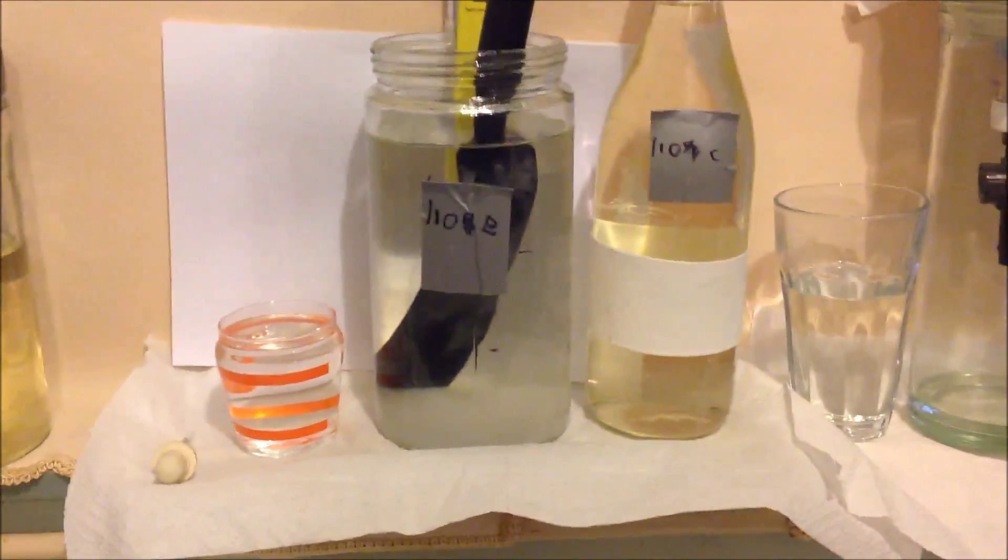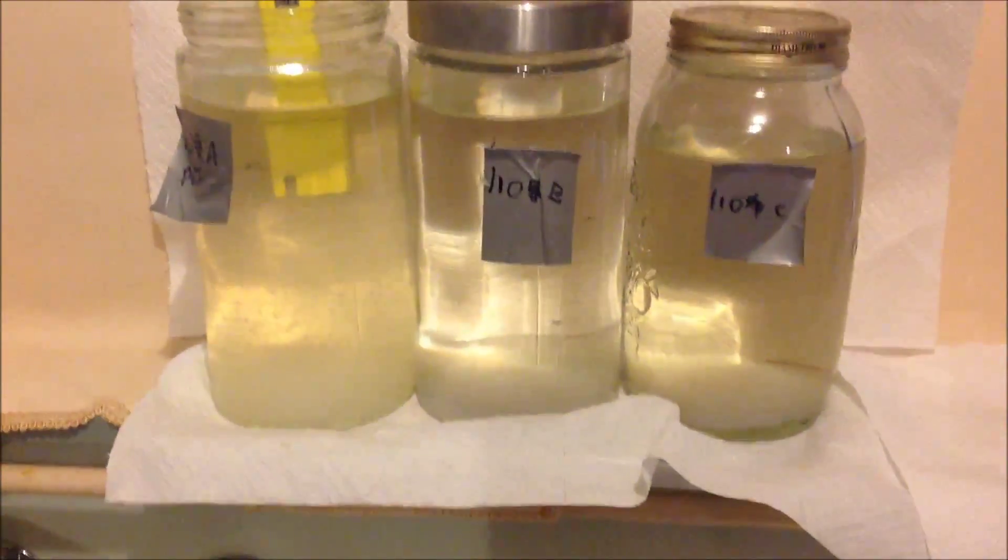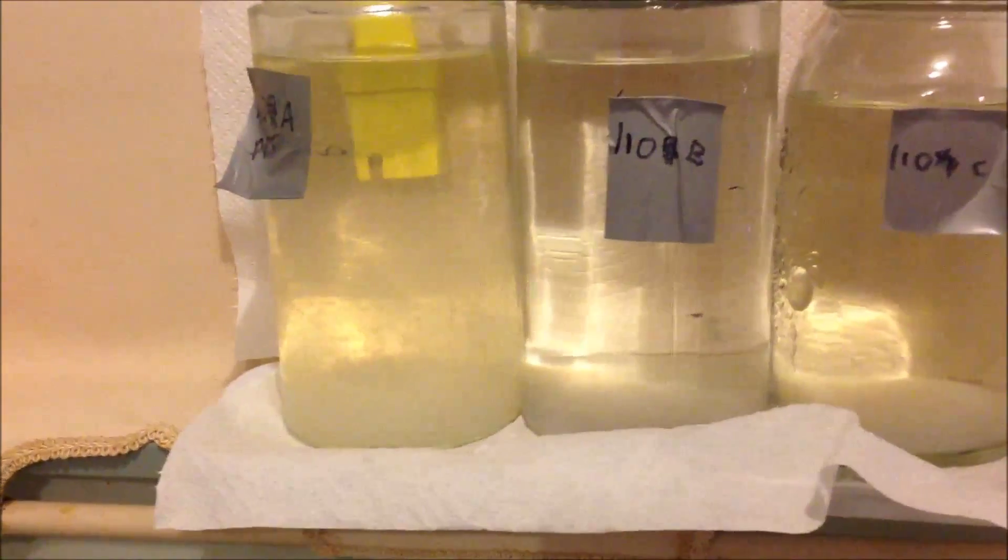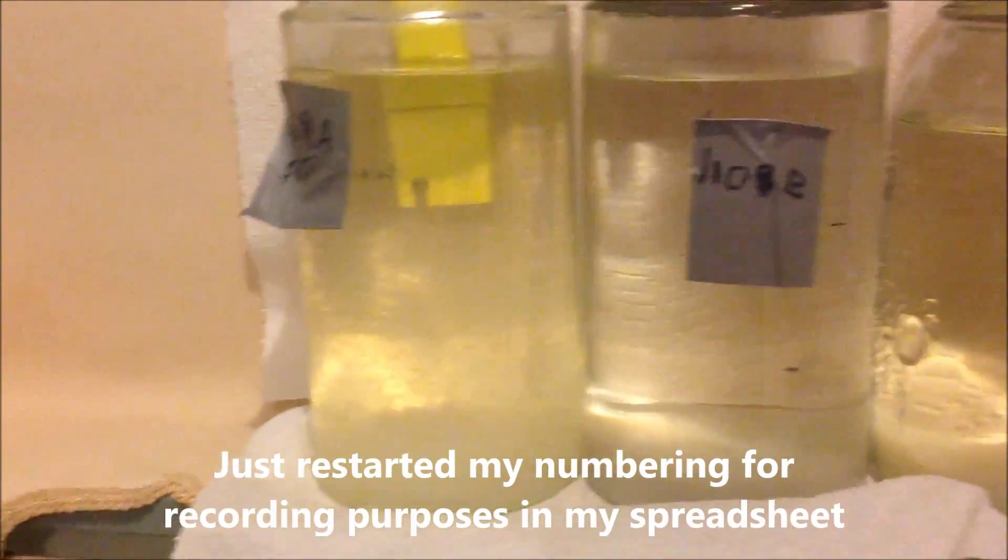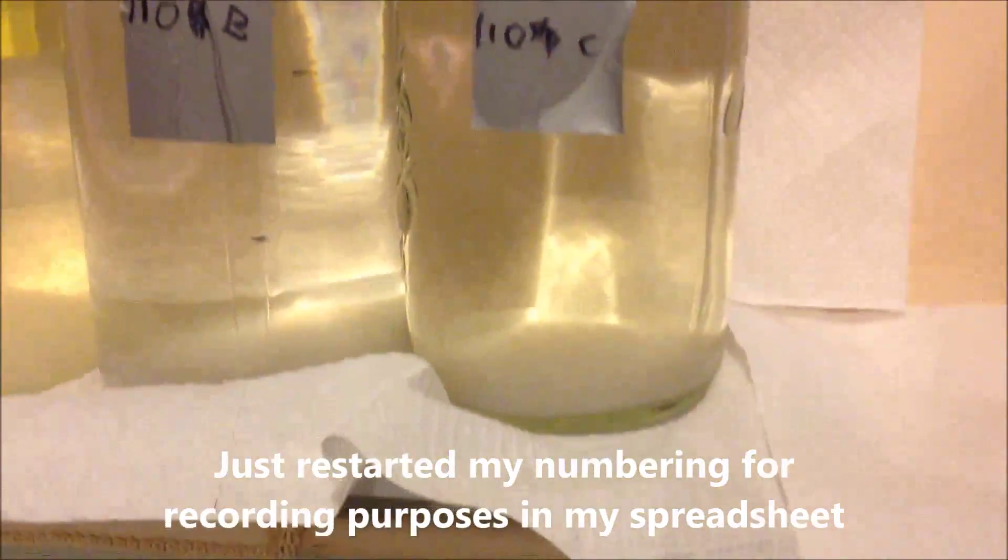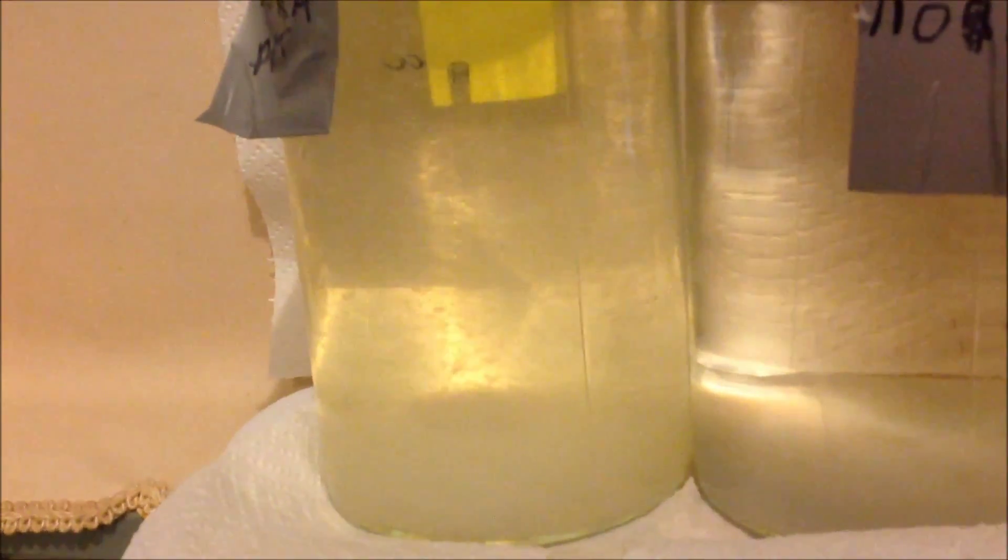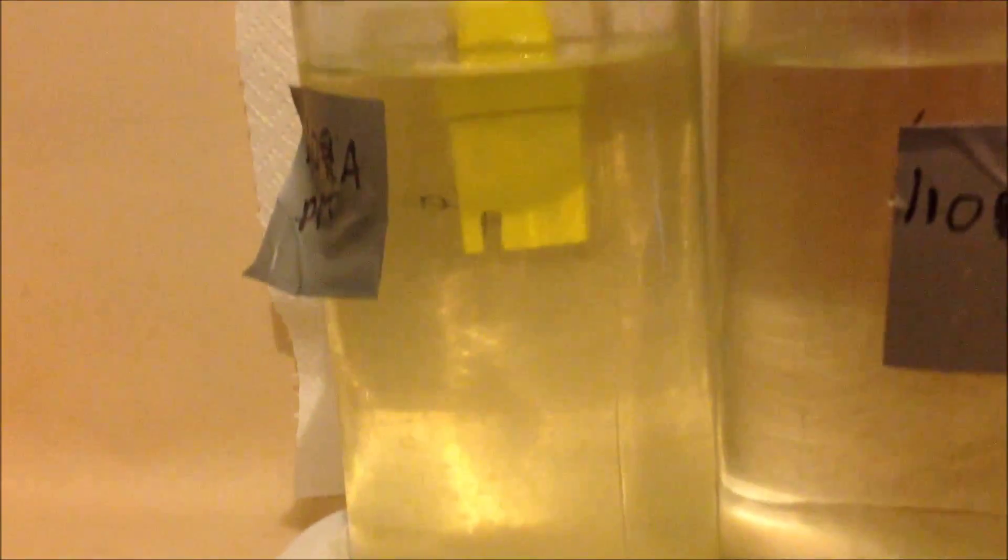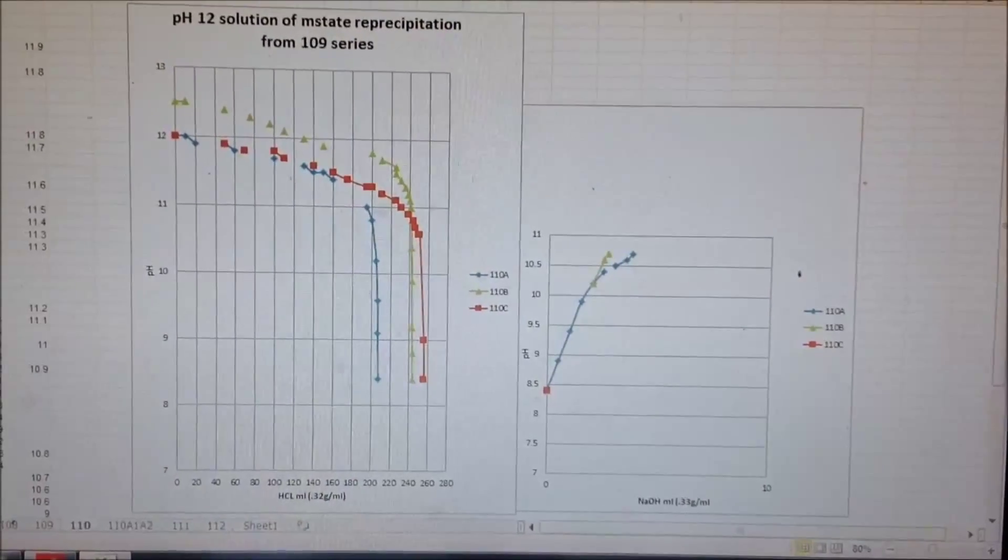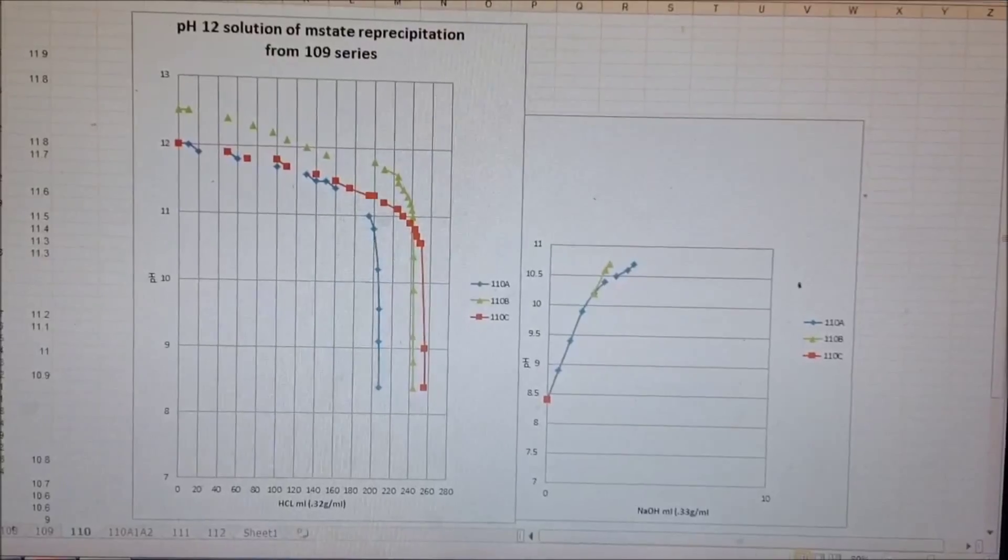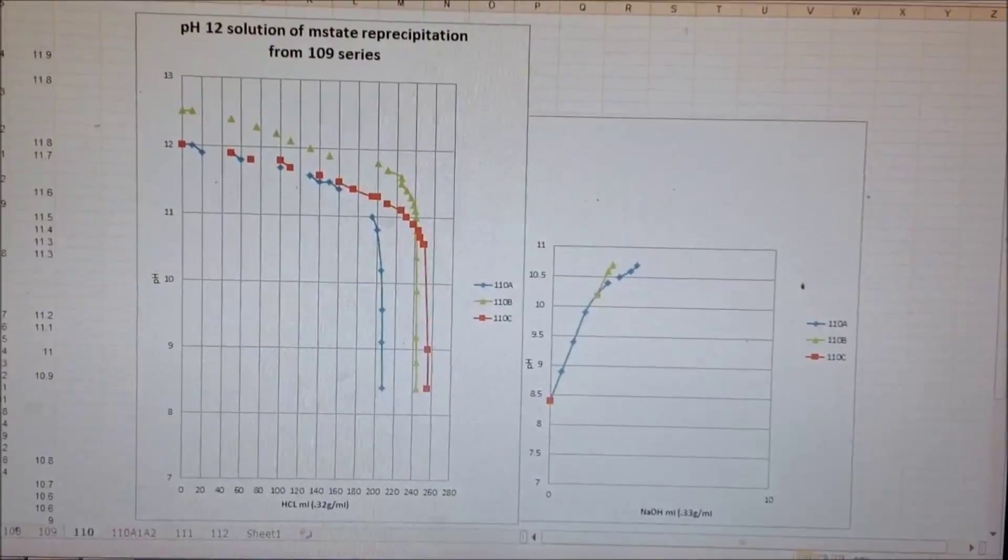All done. The solutions are fairly clear and similar. Maybe 110A has a bit of a yellow tinge. B and C have settled a little, whereas A I only just finished. You can see the precipitate coagulating. It's very fine while stirring but soon aggregates. I ran it up to 10.7. These are the graphs for the solutions from 12 down to 8.5 and back up to 10.7 side by side.